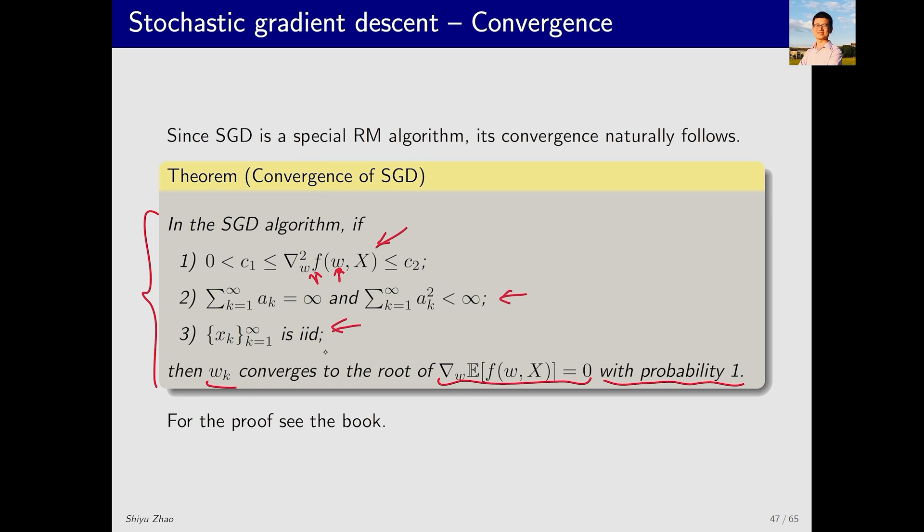The third condition is about the sampling. It requires that the samples be IID. Under these conditions, we can guarantee that SGD can successfully converge to w*. For the detailed proof, you can refer to my book.